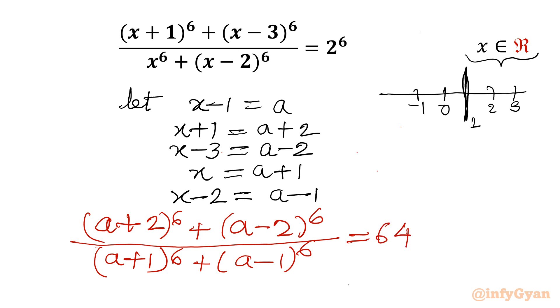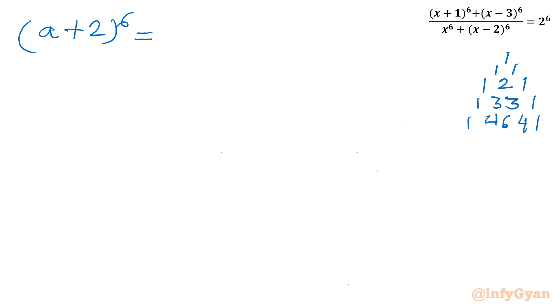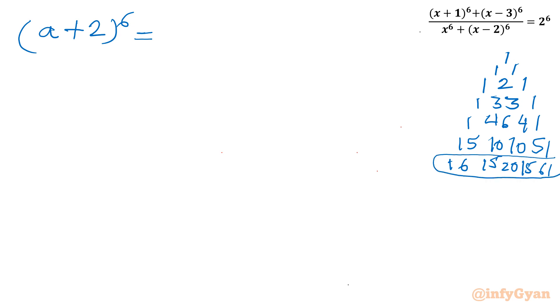Now I will use binomial expansion using Pascal's triangle. Let's get started. The coefficients from Pascal's triangle for power 6 are: 1, 6, 15, 20, 15, 6, 1. This is our required coefficient list.